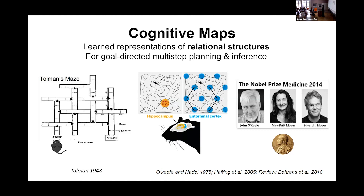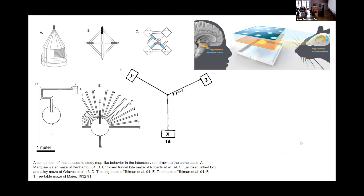In 2014, they won the joint Nobel Prize for this discovery. It's interesting to note that since the 1920s and 30s, and later in the 80s and 90s, researchers designed many different kinds of mazes to test various aspects of cognitive maps.